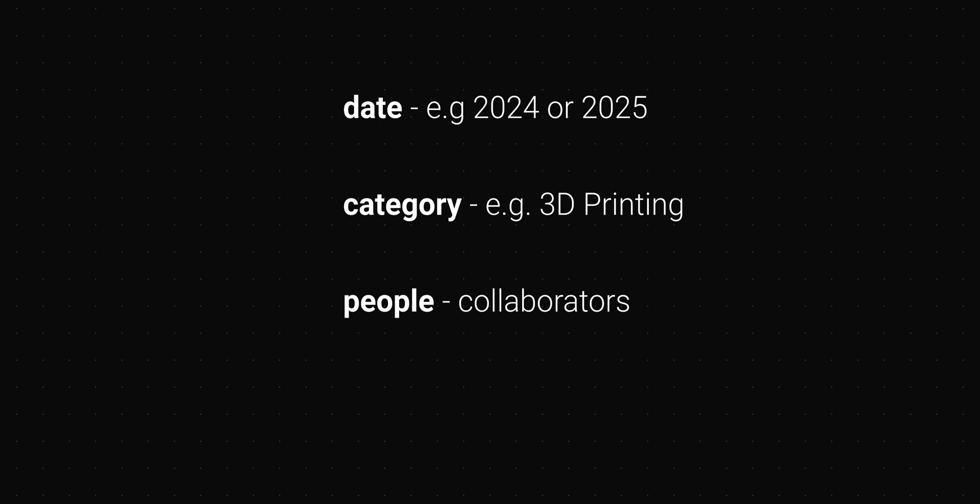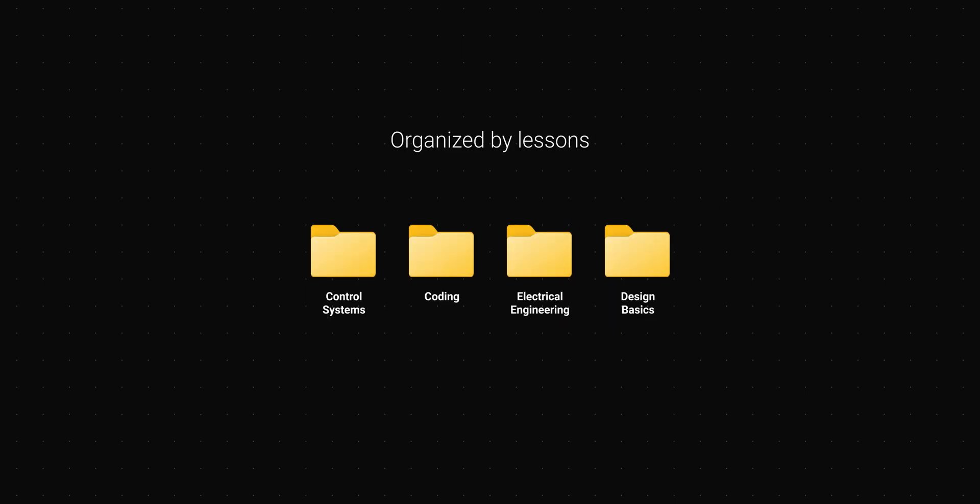Inside each life bucket you can organize files and folders in different ways. Here are my approaches: by date, for example 2024 or 2025; by category, like coding, 3D printing, or laser engraving; by people for different collaborators; or by file type, for example movies or PDFs for books. You can also combine these approaches.